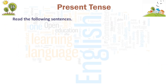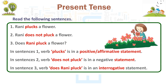Read the following sentences. 1. Rani plucks a flower. 2. Rani does not pluck a flower. 3. Does Rani pluck a flower? In sentence 1, the verb 'plucks' is in a positive or affirmative statement. In sentence 2, the verb 'does not pluck' is in a negative statement. In sentence 3, the verb 'does Rani pluck' is in an interrogative statement.